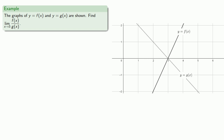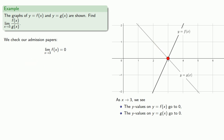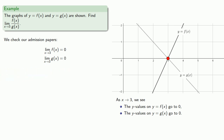Let's check our admission. The limit as x goes to 3 of f of x — we see that as x goes to 3, the y values on y equals f of x go to 0, and so that means the limit will be 0. And as x goes to 3, the y values on y equals g of x also go to 0, and so the limit as x approaches 3 of g of x will be 0, and so L'Hôpital's is relevant.